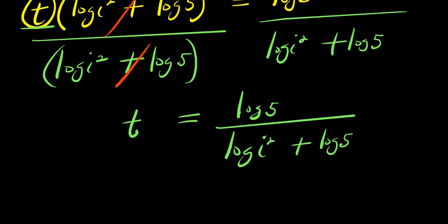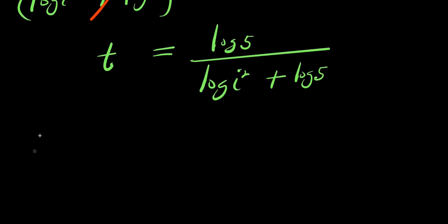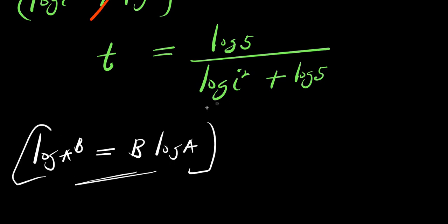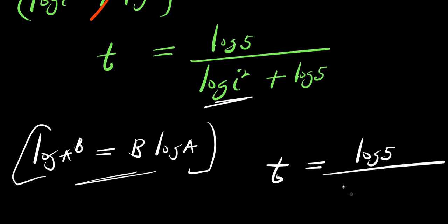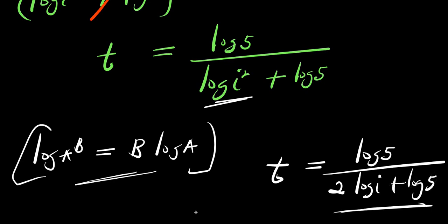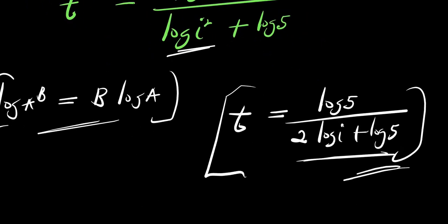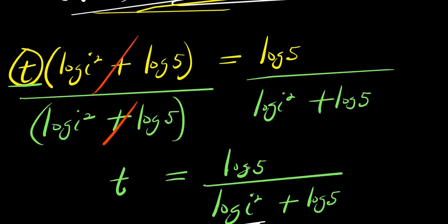We can still apply the logarithm power property: log(a^b) equals b times log a. Applying this right here, the 2 from i² comes down. So what I'm going to have is t equals log 5 divided by (2 log i plus log 5). So that is our answer using this first method.